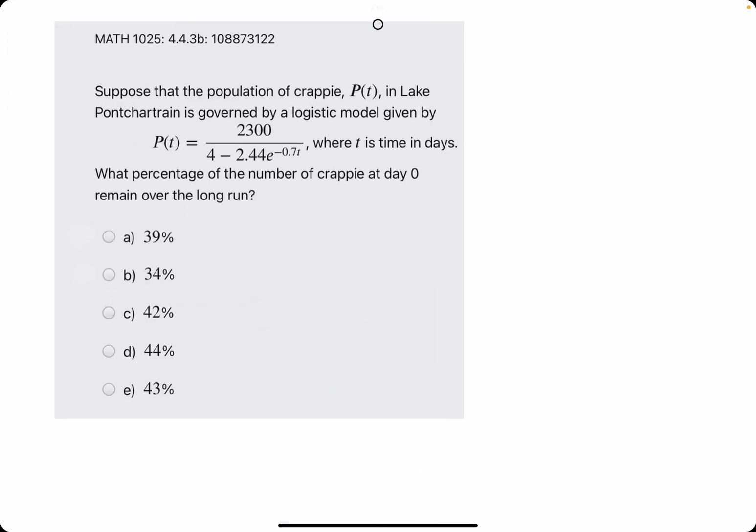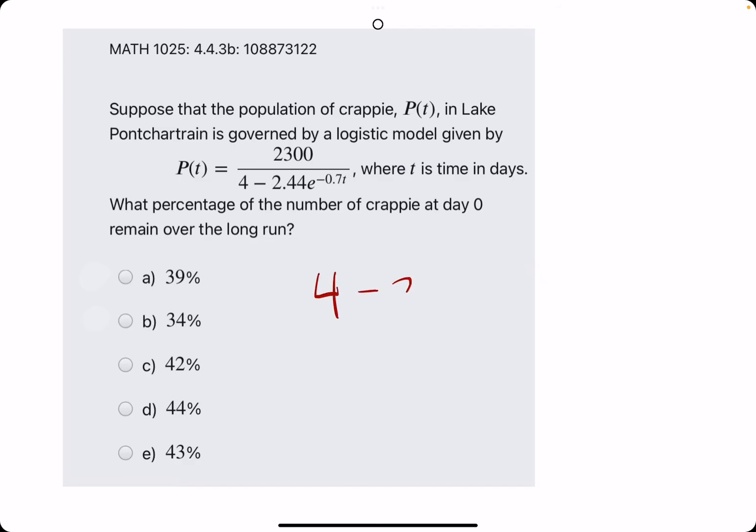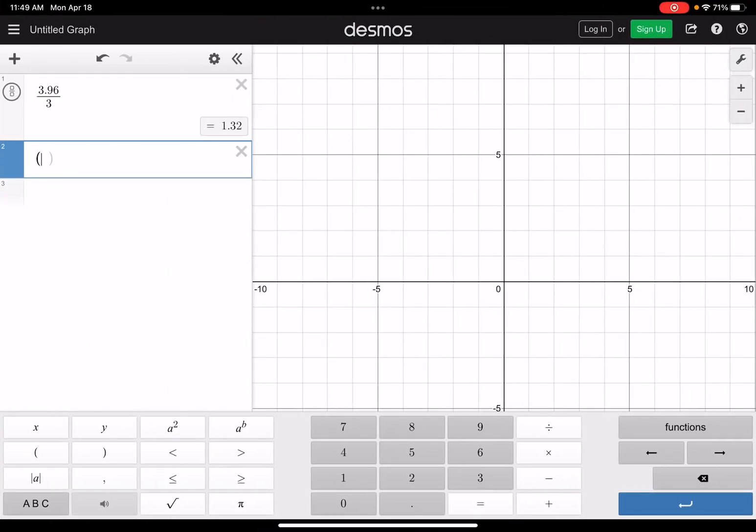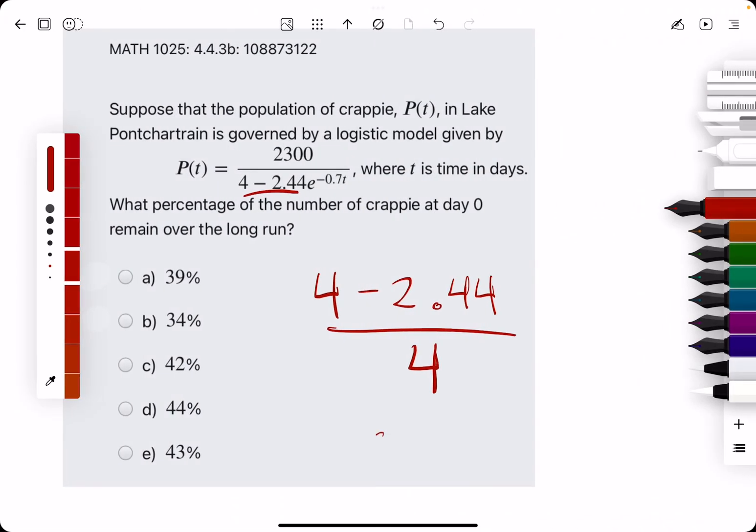So, let's do just one more example real quick. Again, numbers in the bottom. Go ahead and subtract them, like they say. And, then divide by the number not attached to the e term. So, 4. 4 minus 2.44 divided by 4. We get 0.39 or 39%.